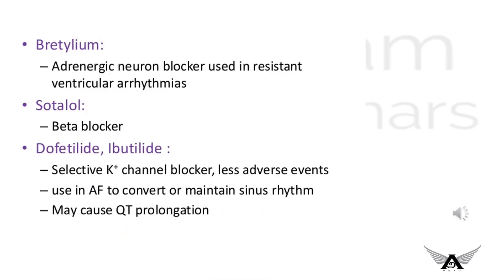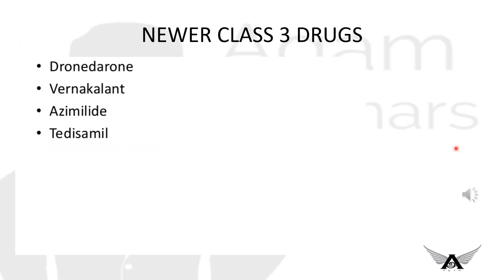Other Class 3 drugs include bretylium, sotalol, ibutilide, and dofetilide. Bretylium is an adrenergic neuron blocker mainly used in resistant ventricular arrhythmias. Sotalol is a beta blocker. Dofetilide and ibutilide are selective potassium channel blockers that may cause QT prolongation; they are mainly used in atrial fibrillation to convert or maintain sinus rhythm. Newer Class 3 drugs include dronedarone, vernakalant, azimilide, and tedisamil.